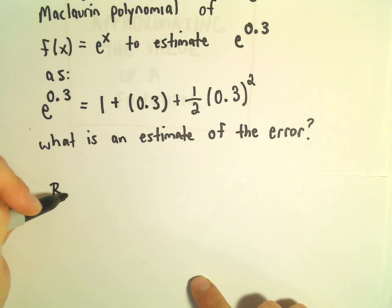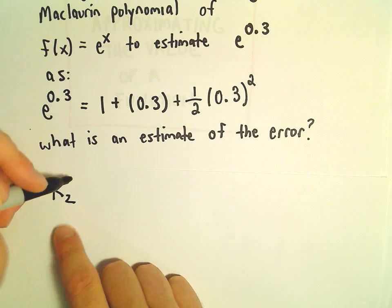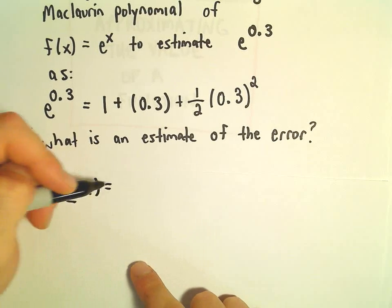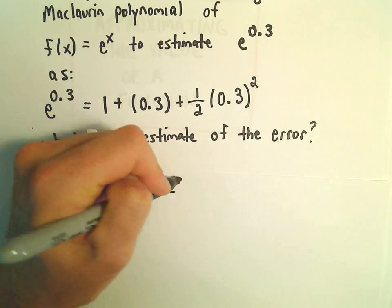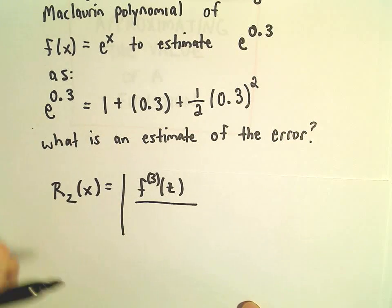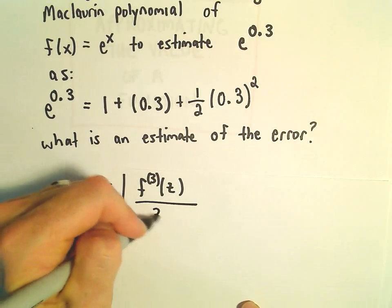So our remainder associated with our second degree polynomial, that's going to equal the third derivative evaluated at z over 3 factorial.